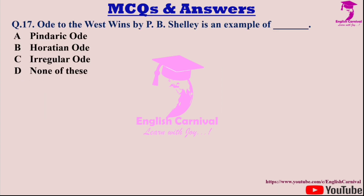Question seventeen: 'Ode to the West Wind' by P. B. Shelley is an example of — dash. Options are A: Pindaric Ode; B: Horatian Ode; C: Irregular Ode; and D: None of these. The correct answer is C — it is an example of an irregular ode.